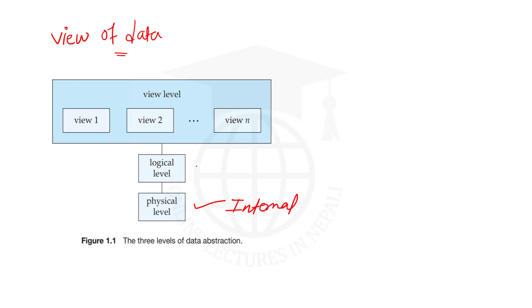The three levels are: first, the logical level — also called the conceptual level. Second, the physical level — also called the internal level. And the last level is the view level — also called the external level.